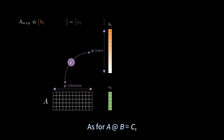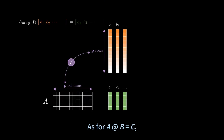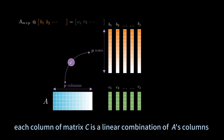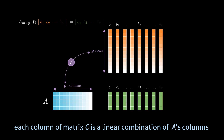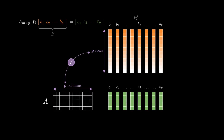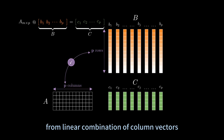As for matrix A times matrix B equals matrix C, each column of matrix C is a linear combination of A's columns. This is how we see matrix multiplication from the linear combination of column vectors.